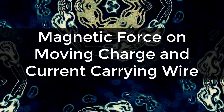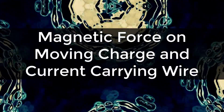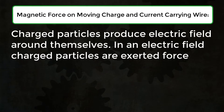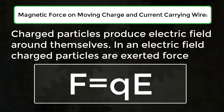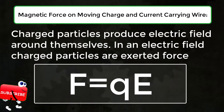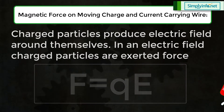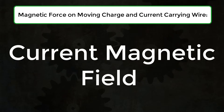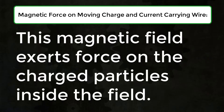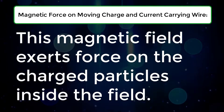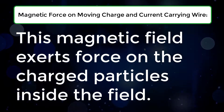Magnetic force on moving charge and current carrying wire. Charged particles produce an electric field around themselves. In an electric field, charged particles are exerted a force F equal to QE. The motion of charges in an electric field produces current, and as a result of the current, a magnetic field is produced. This magnetic field exerts force on the charged particles inside the field.